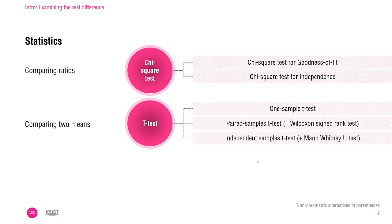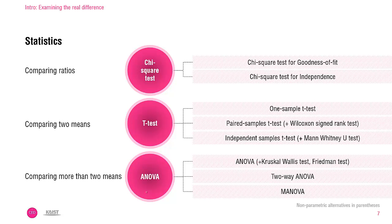Second and third things are comparing mean scores — average scores. When you need to compare two means, the t-test will be perfect. However, when you need to compare more than two mean scores, the t-test is no longer useful, and you need to perform ANOVA tests. The techniques in parentheses, like the Wilcoxon signed-rank test or Mann-Whitney test, are the non-parametric alternatives of the parametric tests. For example, the Wilcoxon signed-rank test is a non-parametric alternative to the paired samples t-test.